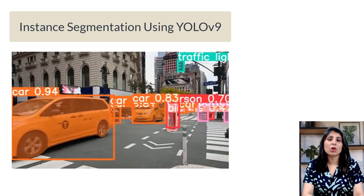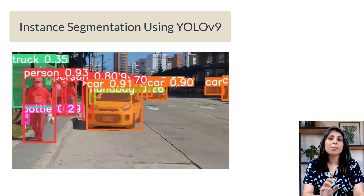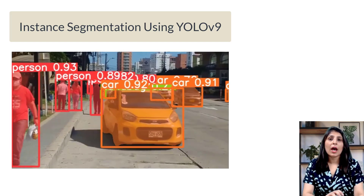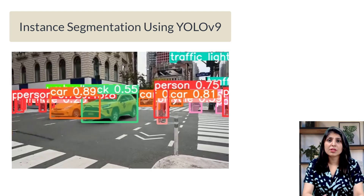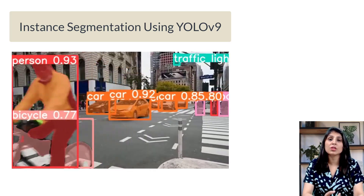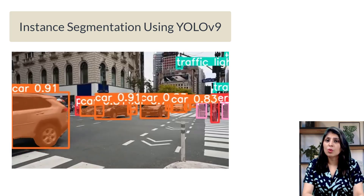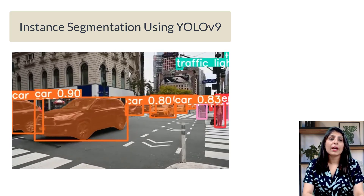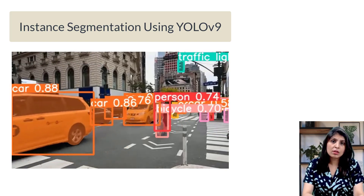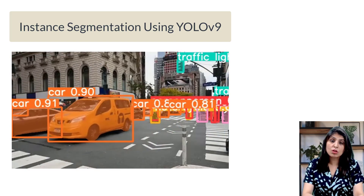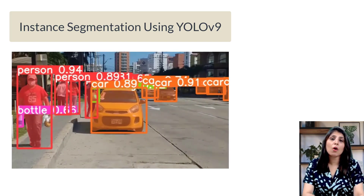Instance segmentation is a computer vision task where the goal of an instance segmentation model is to put a mask on each detected object in the image, so it is a pixel-wise classification. There are various instance segmentation models like Mask R-CNN, and you can perform instance segmentation using various YOLO models like YOLOv5, YOLOv7, YOLOv8, and also the Segment Anything Model.